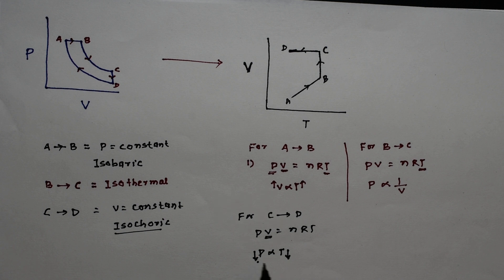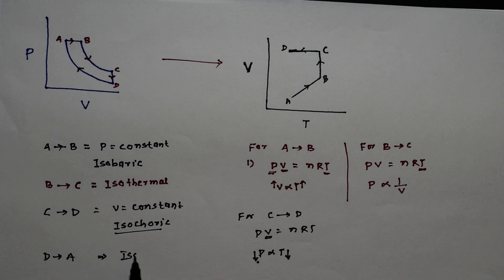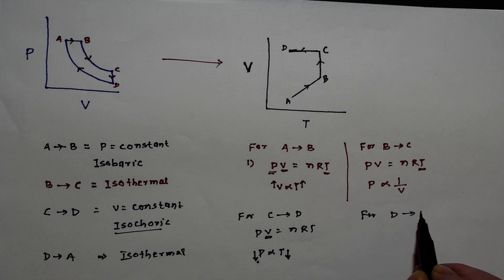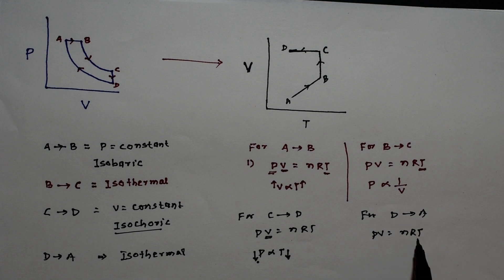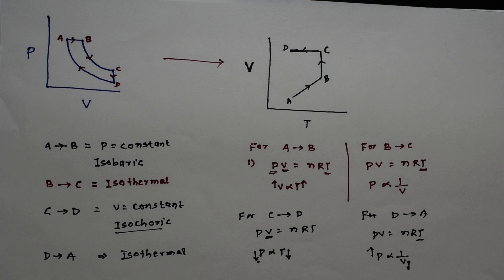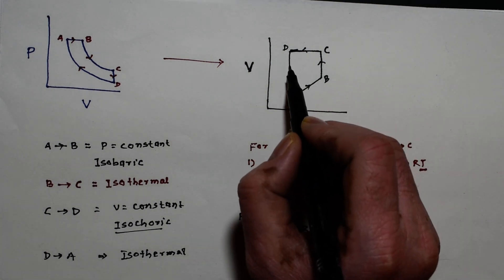For the last process, D to A, this is an isothermal process because temperature is constant. Using PV = NRT, pressure is inversely proportional to volume. In this process, volume decreases and pressure increases. Since temperature is constant, this traces a curve back to A on the VT diagram, with temperature remaining constant.